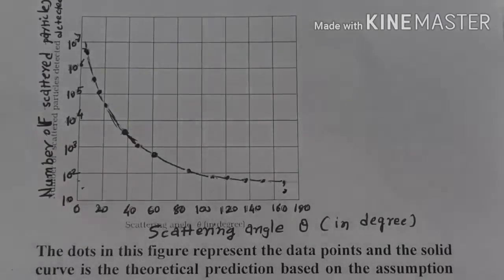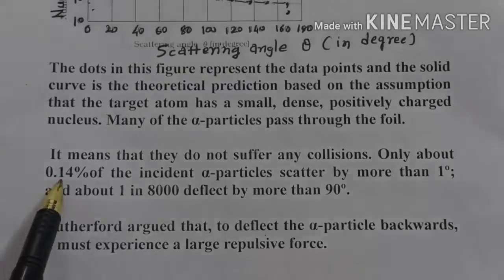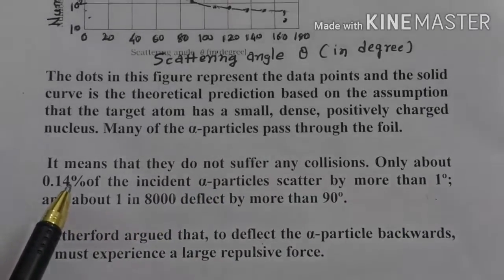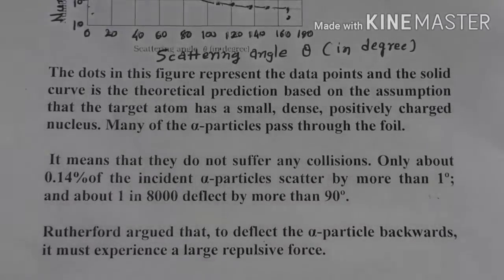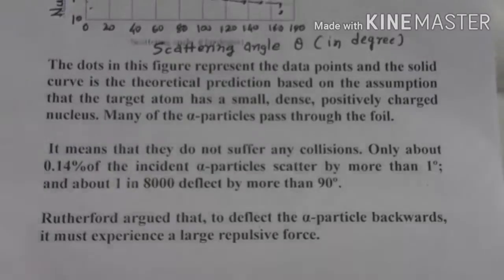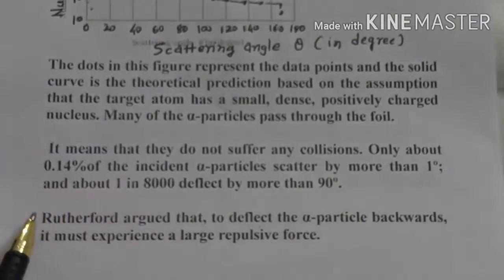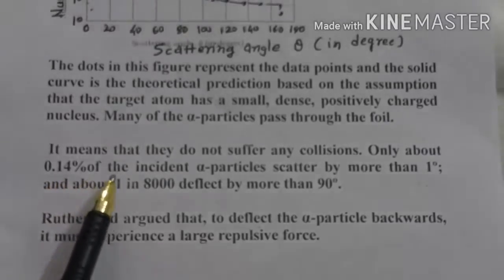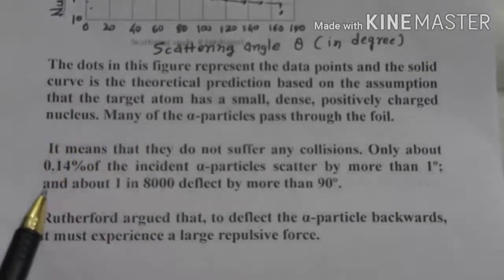Now you will see how many percent of the alpha particles are scattered by more than 1 degree. You can see only 0.14% of the incident alpha particles scattered by more than 1 degree. Most of the alpha particles pass through.